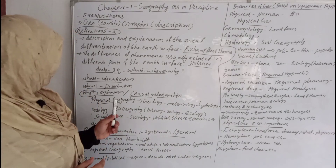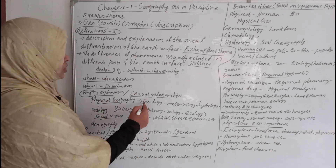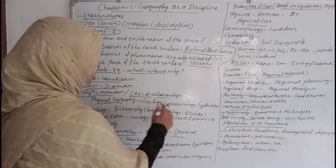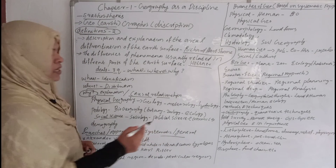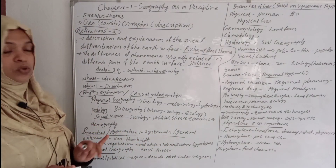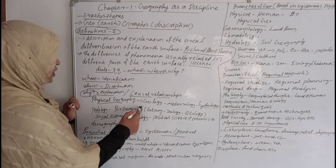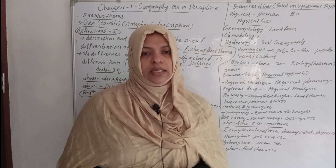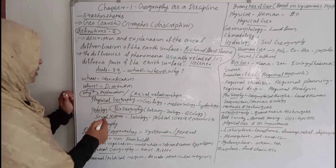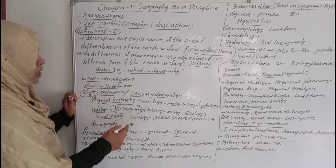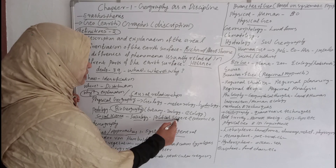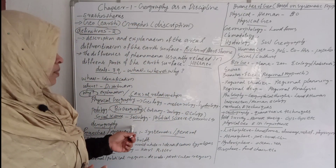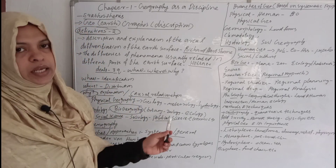Now let's learn about Physical Geography. Physical Geography is an important part of Geology, Meteorology, Hydrology, and Pedology. Biogeography is related to Botany, Zoology, and Ecology. If you want to learn about Social Science, Geography is connected to Sociology, Political Science, Economics, and Demography.